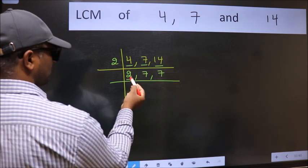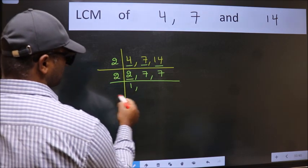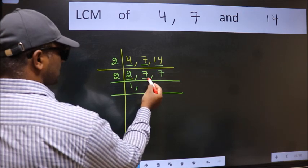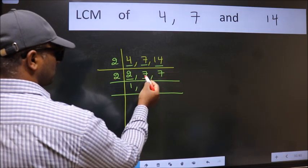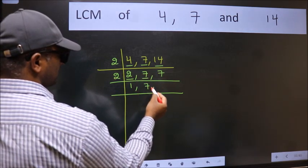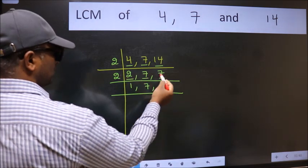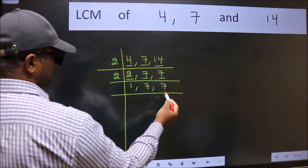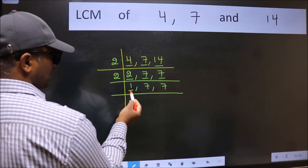Now here we have 2. 2 is a prime number, so 2 1's 2. The other number 7, not divisible by 2, so we write it down as it is. The other number 7, not divisible by 2, so we write it down as it is. Now we got 1 here.